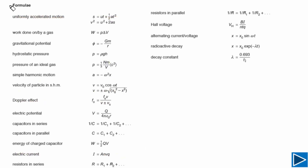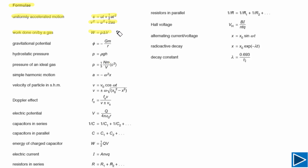On the next page, some important formulae are given. Let me highlight the ones you need for AS Physics. The first is for uniform acceleration — you can only use these when the acceleration is constant. The next one is work done on a gas: W = P ΔV, where P is constant and ΔV is the change in volume.